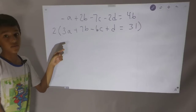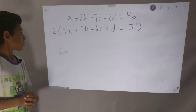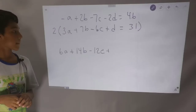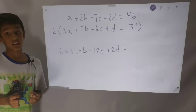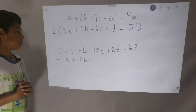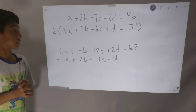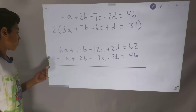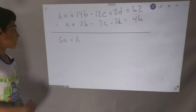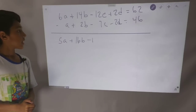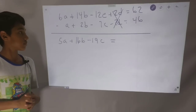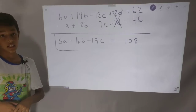So times 2 for P4, we get 6A plus 14B minus 12C plus 2D. Then we combine it with P3, which is negative A plus 2B minus 7C minus 2D equals 46. Combining: 6A minus A is 5A, 14B plus 2B is 16B, and minus 19C, and the 2D's cancel out, giving us 5A plus 16B minus 19C equals 108. We label this E2, equation 2.